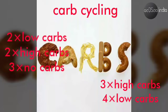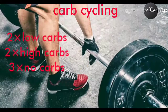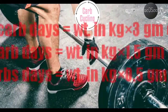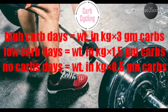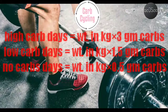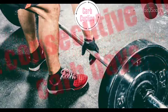You perform carb cycling weekly, dividing into high carb and low carb days. For carb consumption: on high carb days, consume 3 times your weight in kg; on low carb days, 1.5 times your weight; and on no carb days, 0.5 times your weight in kg.